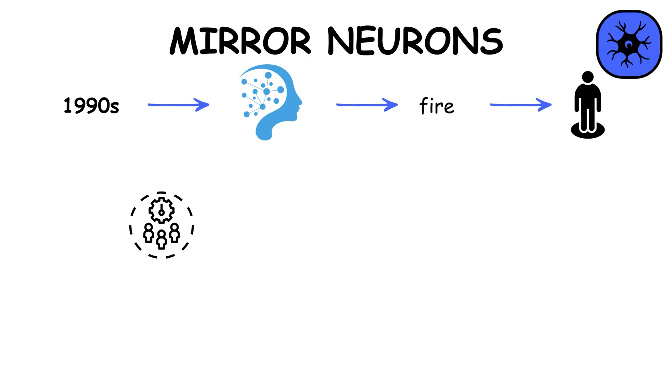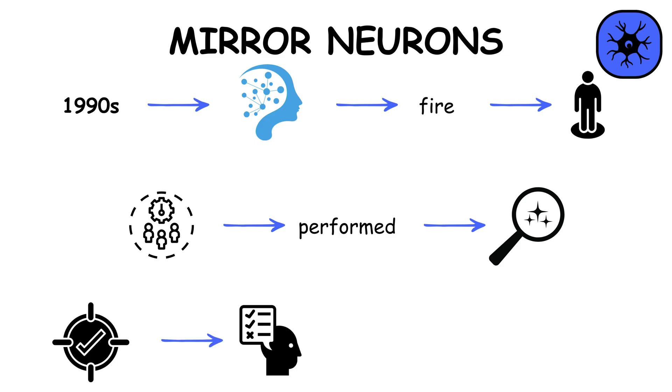Mirror Neurons, discovered in the 1990s, are brain cells that fire both when an individual acts and when they observe the same action performed by others. This discovery has implications for understanding empathy, learning, and social interactions.